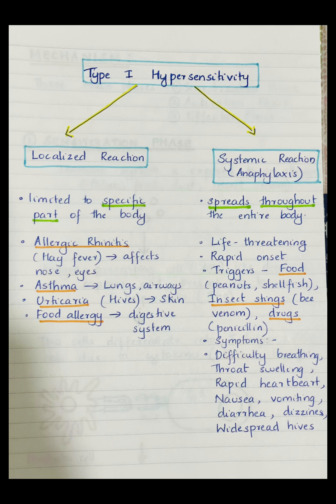Localized reaction occurs when the allergic response is limited to a specific part of the body. For example, allergic rhinitis or hay fever affects the nose and eyes, causing symptoms such as sneezing, runny nose, watery eyes, or nasal congestion. Asthma affects the lungs and airways and causes symptoms such as wheezing, shortness of breath, and chest tightness. Urticaria or hives is caused by food allergies, medications, or insect bites, resulting in red colored itchy deep swellings on the skin.